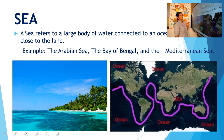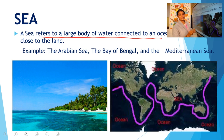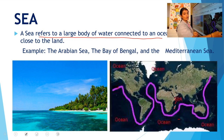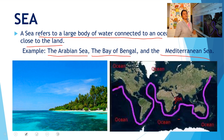Next landform is sea. A sea refers to a large body of water connected to an ocean. Sea is a part of the ocean, but the speciality is it is close to the land. For example, the Arabian Sea, the Bay of Bengal, and the Mediterranean Sea.